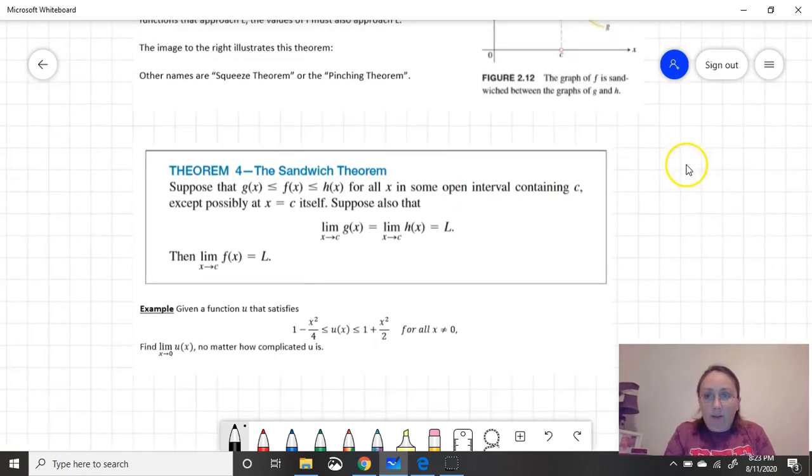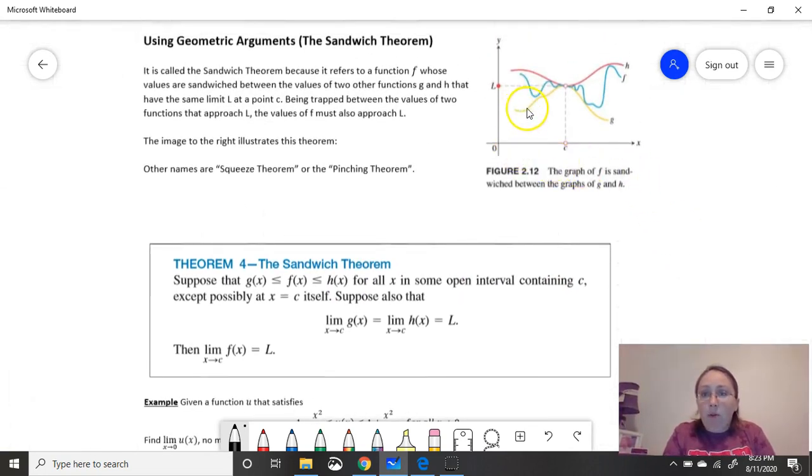And then c is the number you're trying to let x approach. So as x approaches c, let's go back up to our picture here. As x approaches c, we follow the curve g and we approach this point here. If we follow the curve h, we approach the same point. Because f is stuck in between, as we follow f approaching c for our x value, we also approach that point because it's stuck in between.